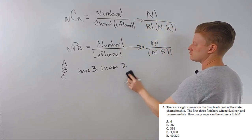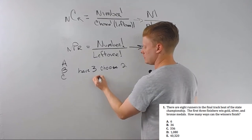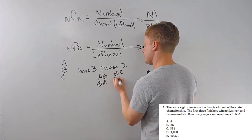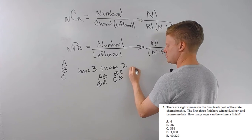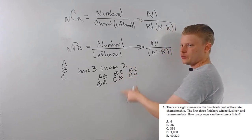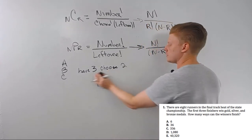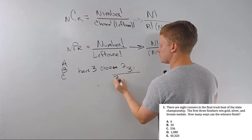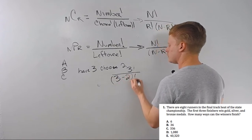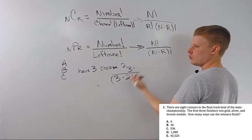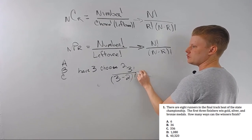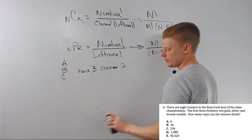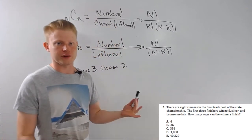For NPR, on the other hand, we could have A, B — then also B, A; B, C — then C, B; A, C — then C, A. So for this example there's twice as many: there's six. Using the formula, it's 3 factorial over (3 minus 2) factorial, which is 1 factorial, so 3 factorial equals 3 times 2 times 1 equals 6. You notice there are more possibilities with permutations than combinations, and that's always the case across the board.